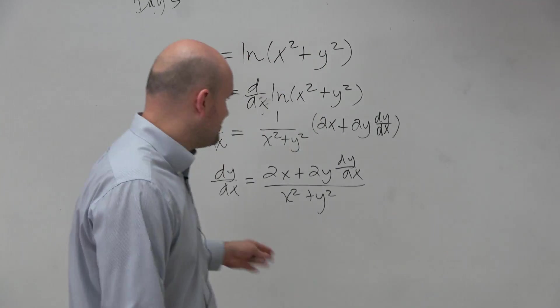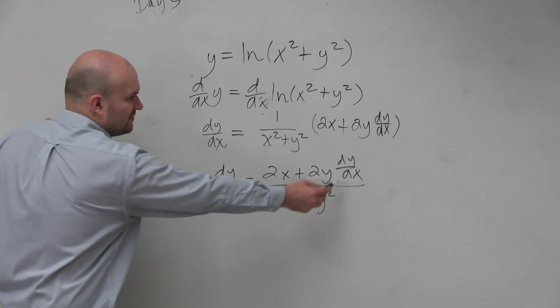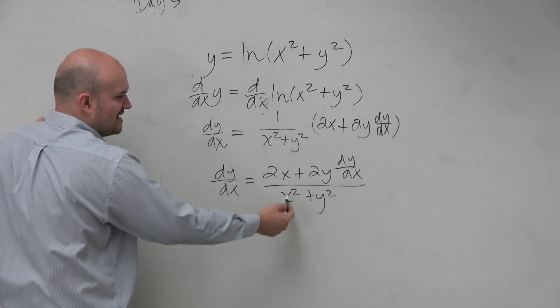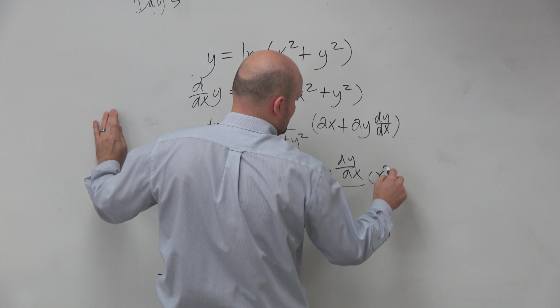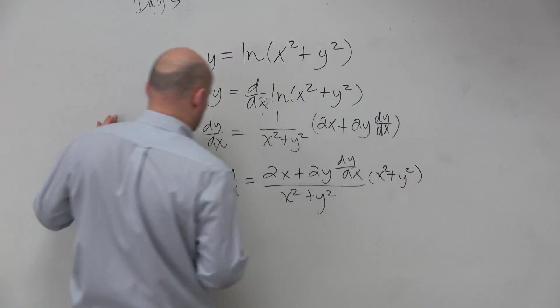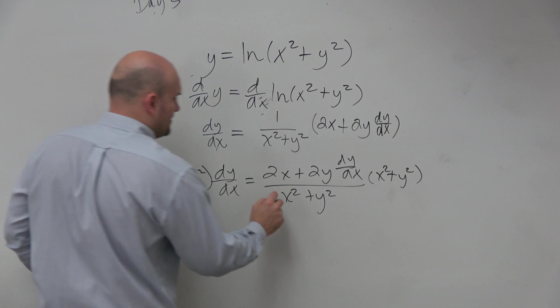Then we've got to group the dy dx on the same side. Well, we kind of have a problem here because we can't get the dy dx to the same side unless we distribute this x squared minus y squared.